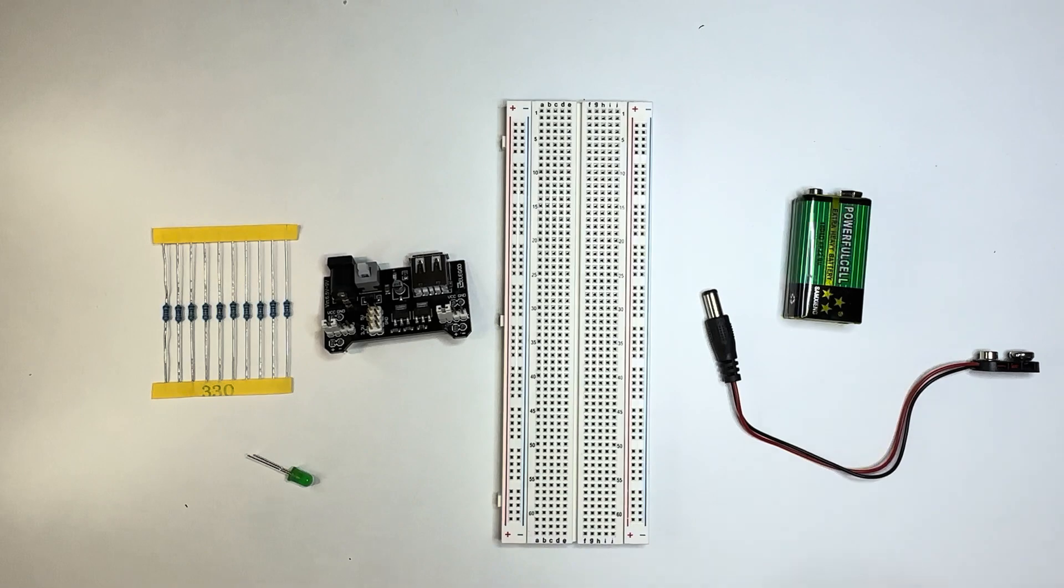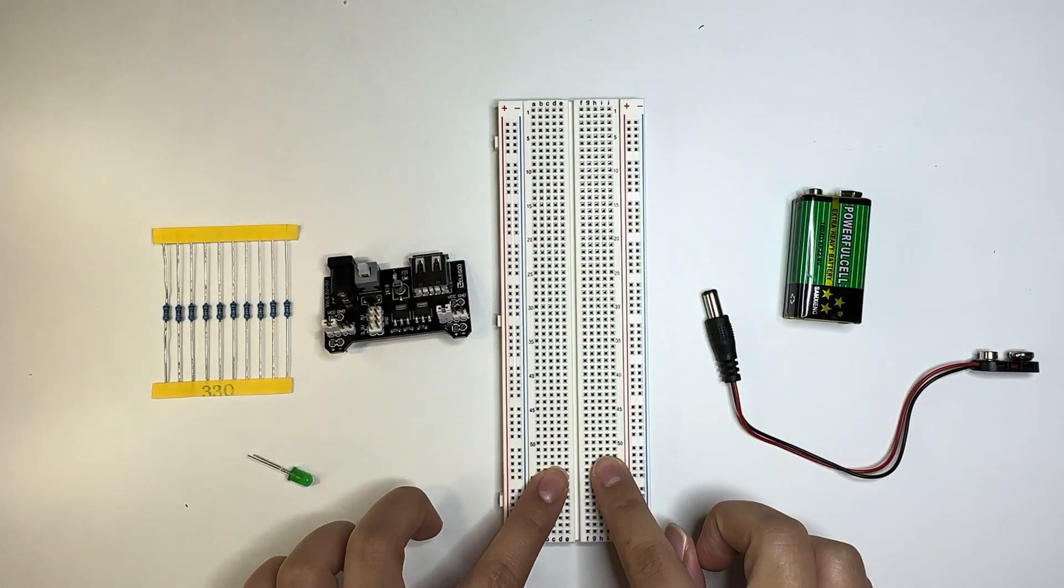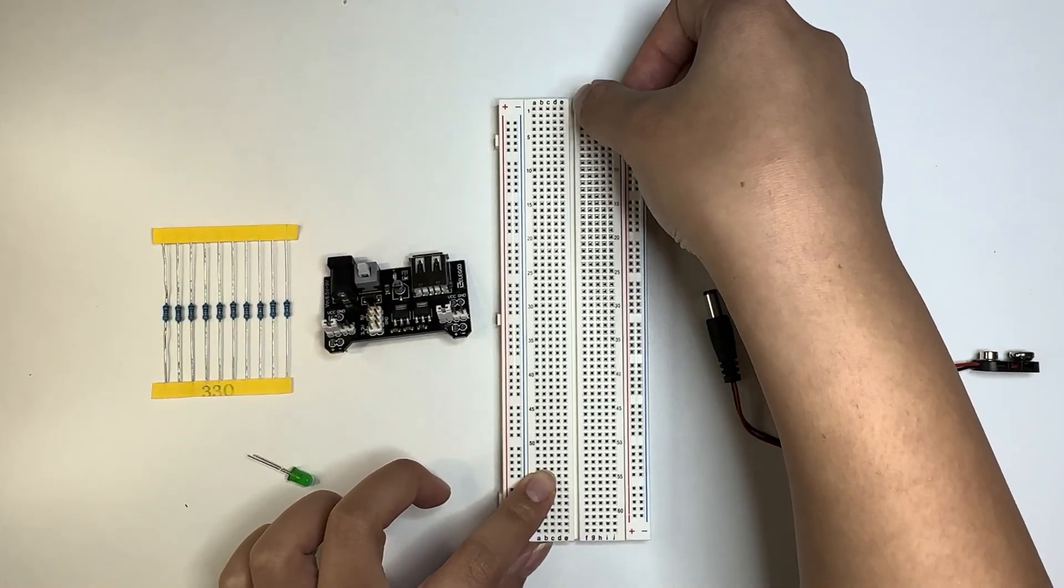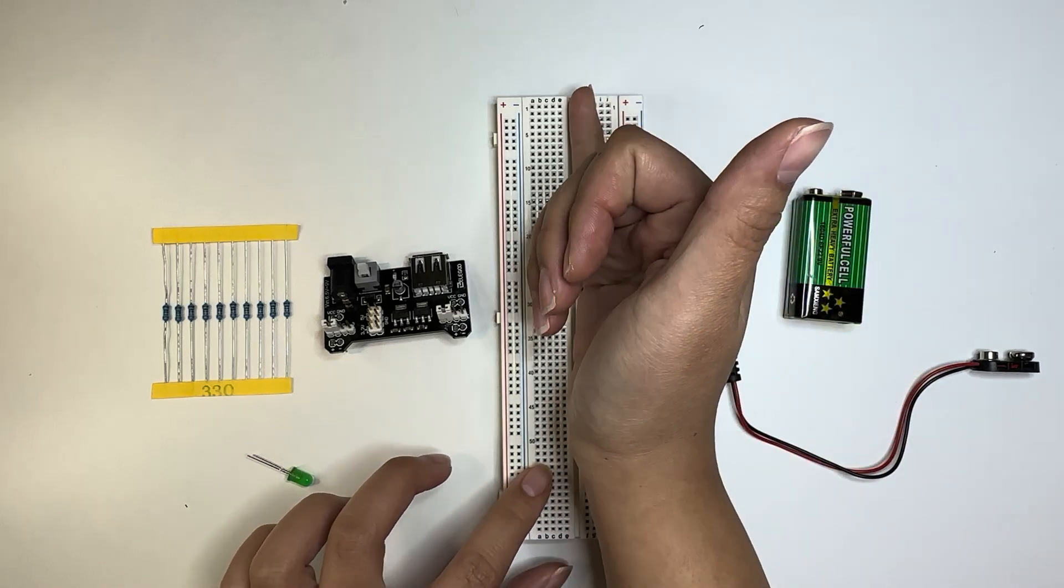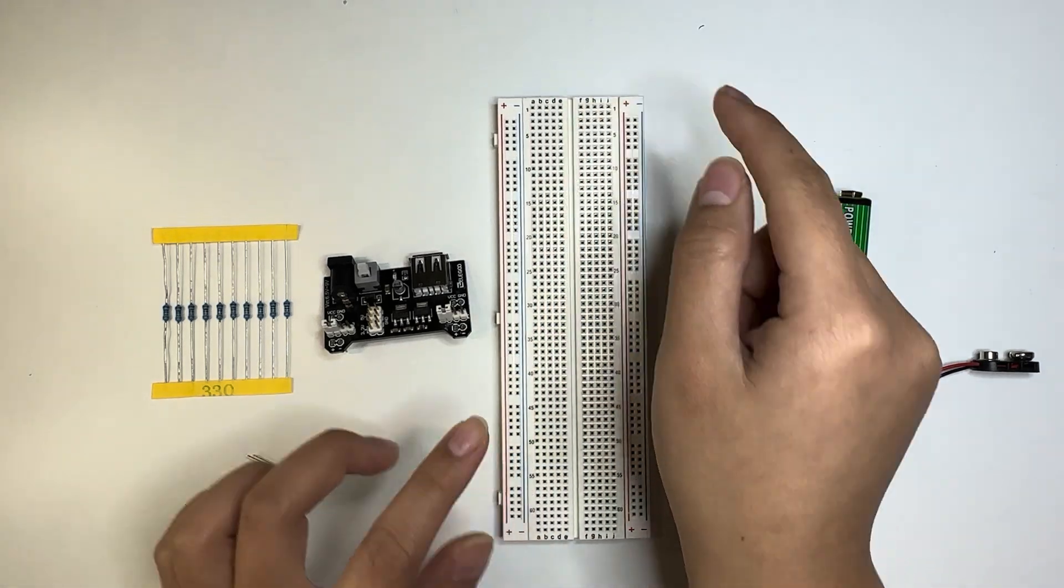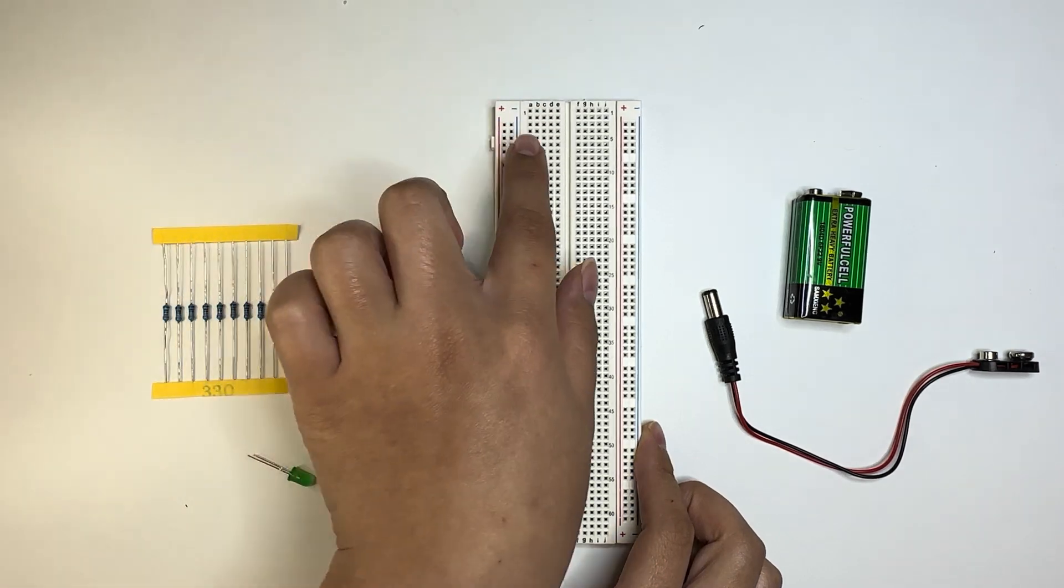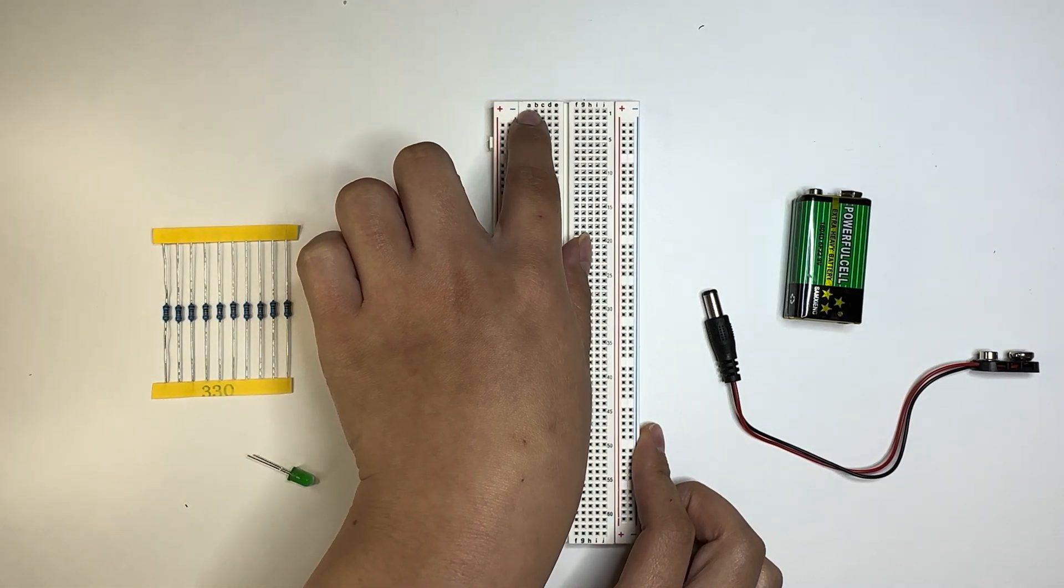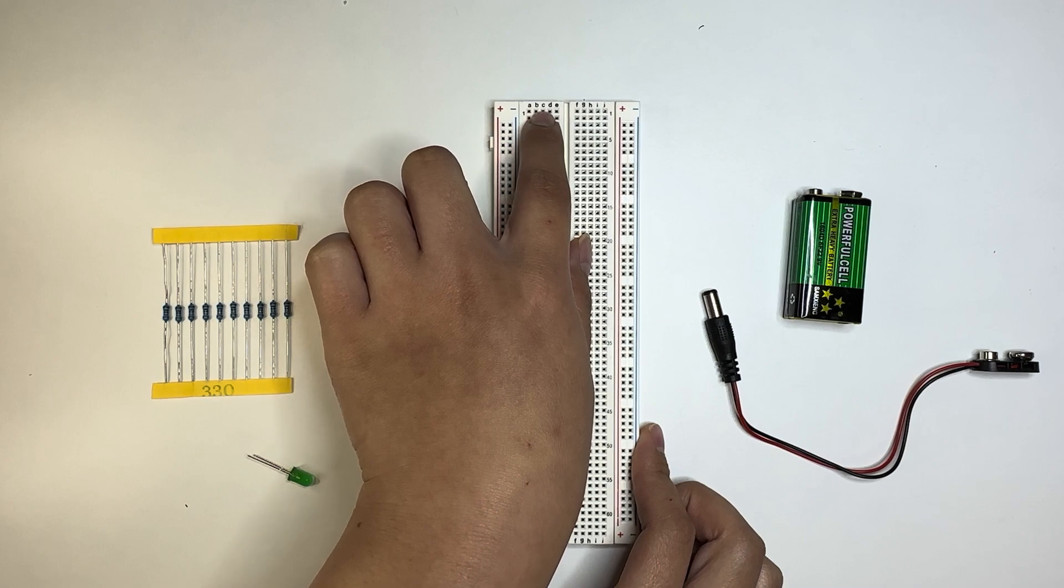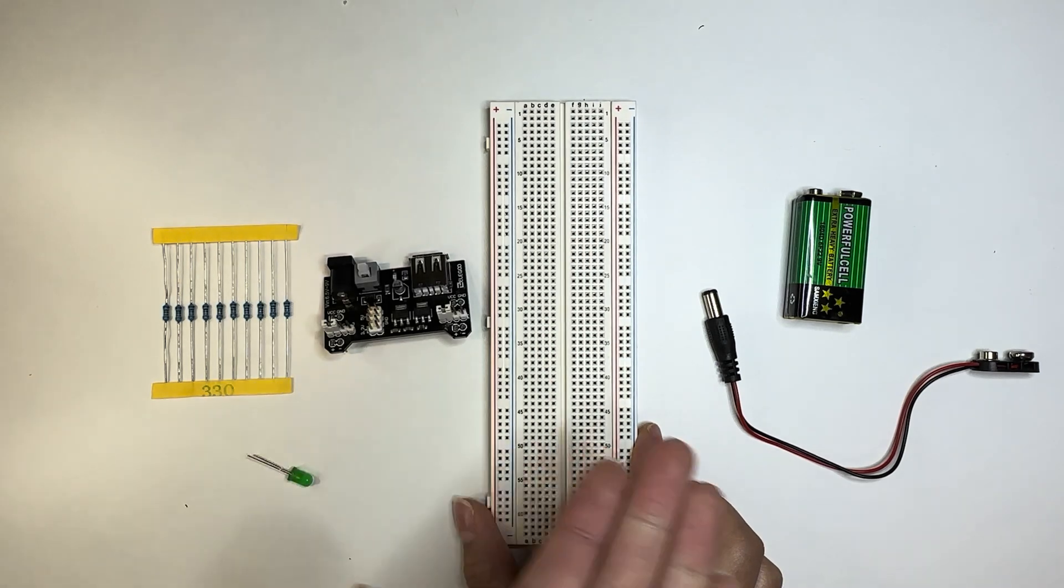And same goes on this side. But for the middle portion, they're divided with the trench. So this is a trench. So on the left side, A, B, C, D, E, all of these rows are interconnected horizontally. Okay, so A is interconnected with B, which is interconnected with C, D, E, you know, you get the point.